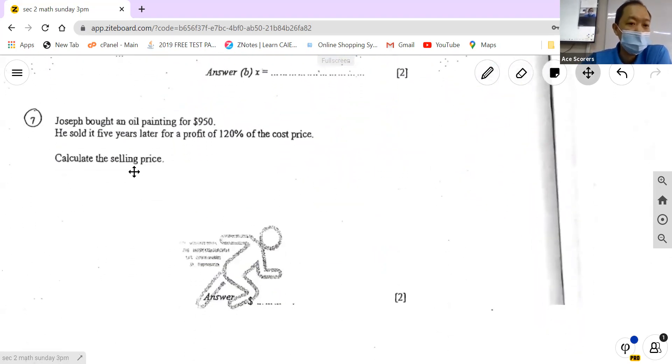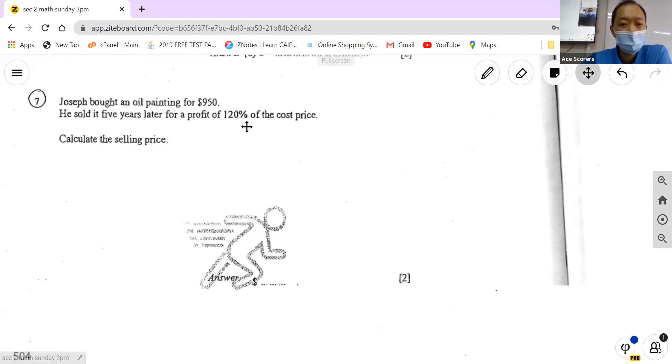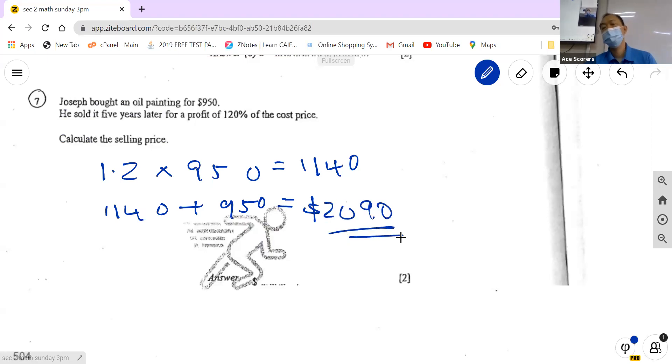Next one. This is a question: Joseph bought an oil painting for $950. He sold it five years later for a profit of 120% of the cost price. What's the selling price? This is easy. So just take 1.2 times 950, you will get 1140. But this is not the selling price, you need to add to the original price. So it's 1140 plus 950, so the selling price is 2090. Alright, thanks.